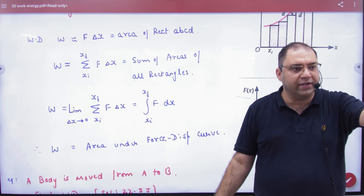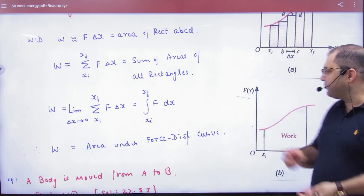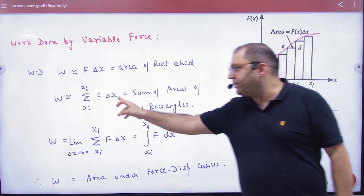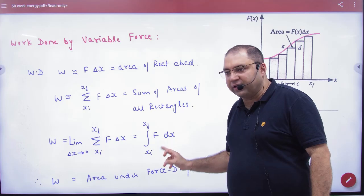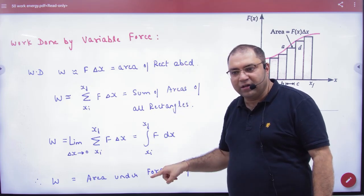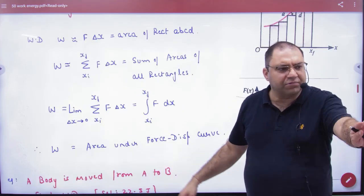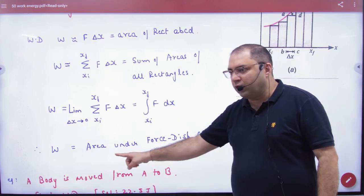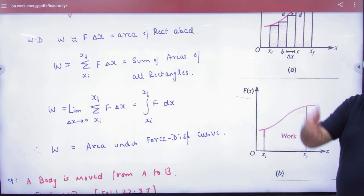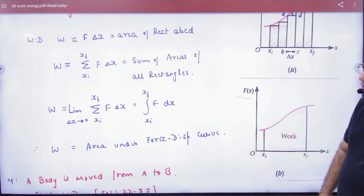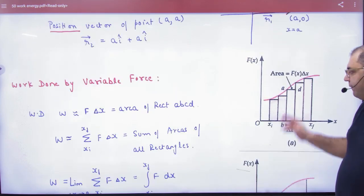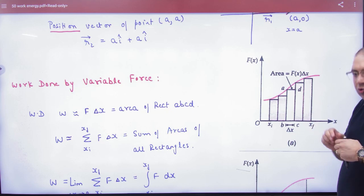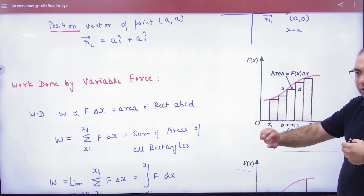If delta x approaches zero, that means delta x is increased — what is that called? dx. From the first lecture: limit of delta x approaching zero. Work done is the area under the force-displacement curve. If you take large areas you add them, but if you take small areas you integrate delta x.